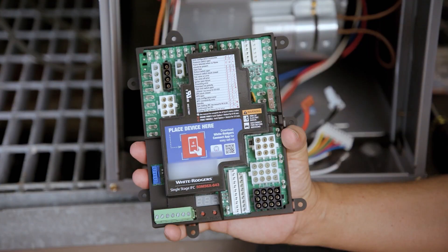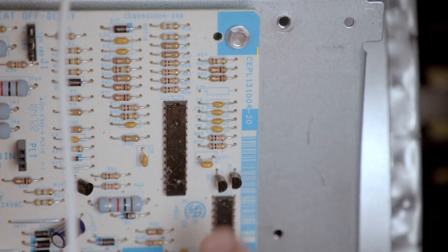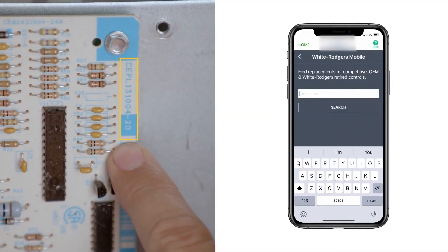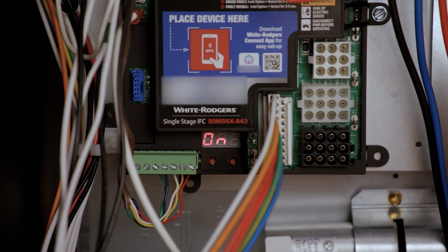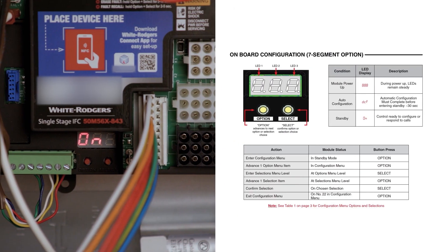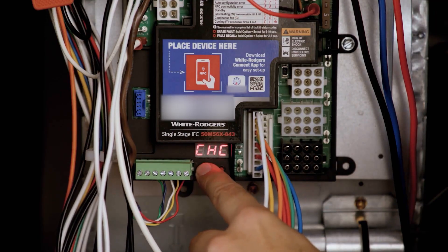Overall, the 50M56X-843 is easy to install and configure. You can use the White Rogers mobile app to find a cross-reference. On the board is a 7-segment display for showing status and error codes. The buttons enable configuration after the board has been installed.